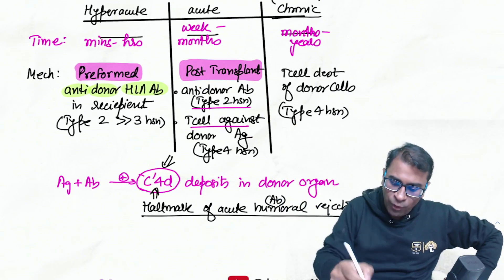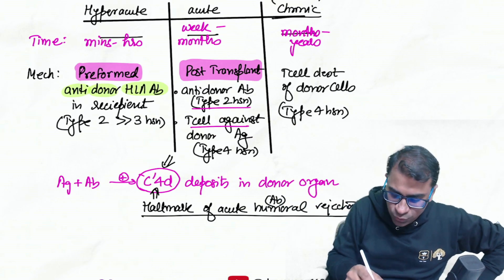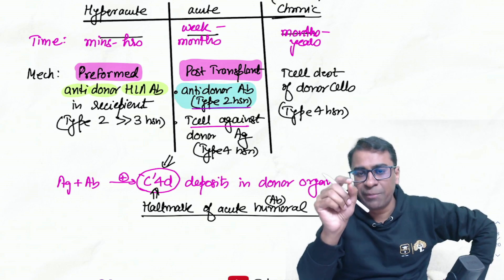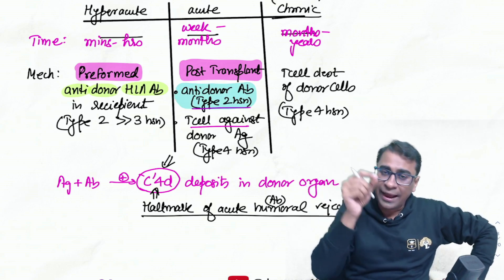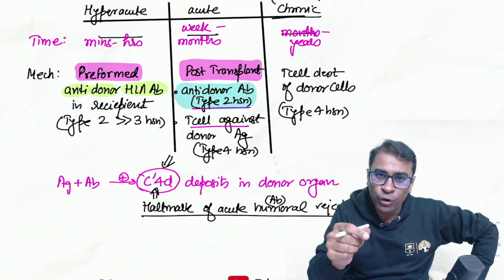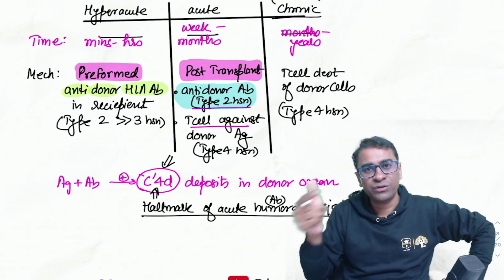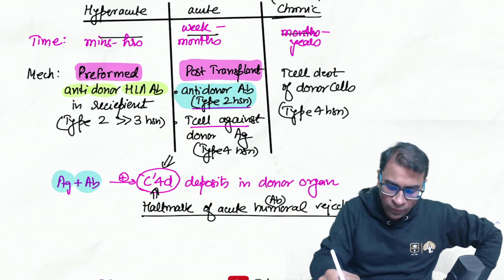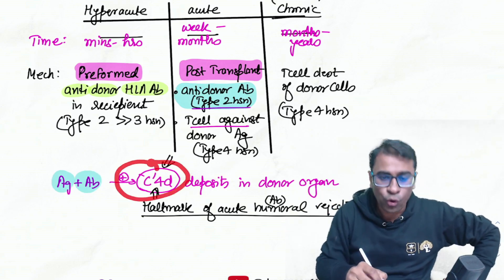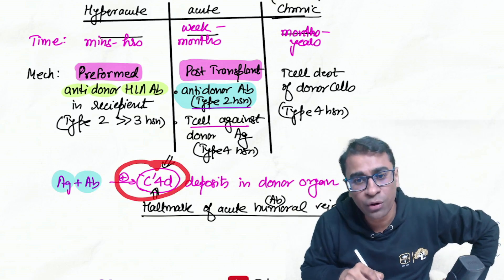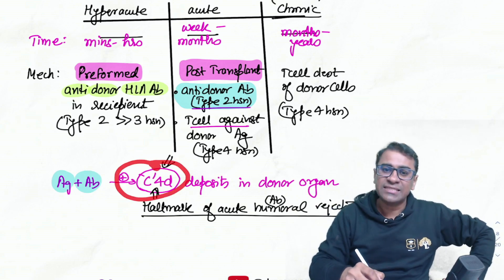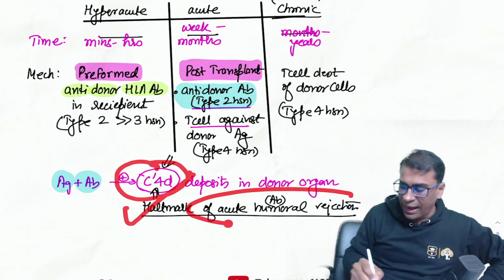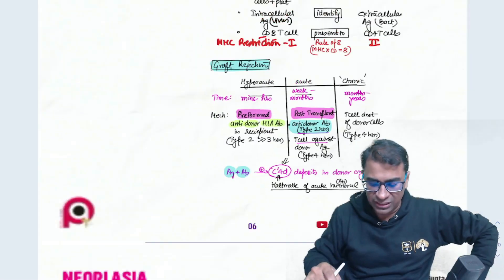In acute antibody-mediated rejection, antigen-antibody complexes activate complement. The hallmark finding is C4D deposition — C4D deposition is the hallmark of acute antibody-mediated rejection.